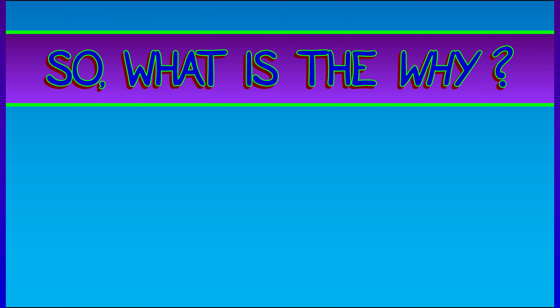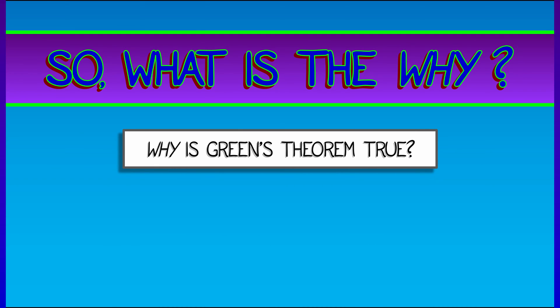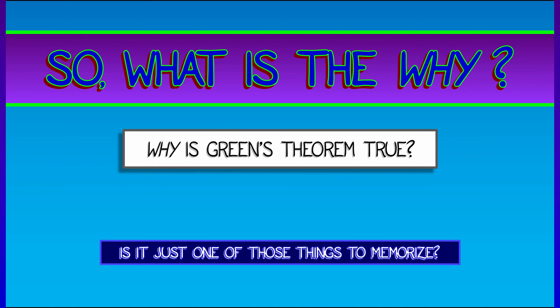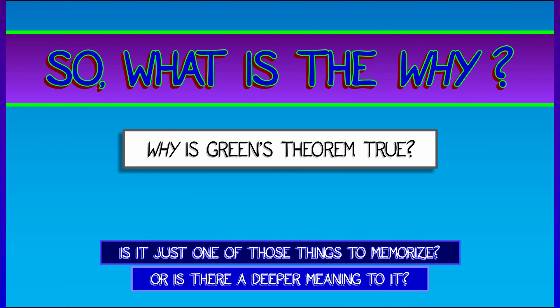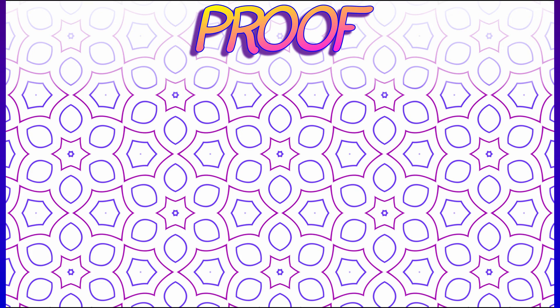All right, then. So we've seen what Green's theorem is. We've seen an example or two. But why is Green's theorem? Why is it true? Is it just one of those things that you got to memorize because it's on the exam? Or is there some deeper meaning to it? A meaning deep enough that it is worth digging into the idea of the proof. Well, what do you think? Yes, of course, it's really deep. It's really important. We're going to go over the proof, not a complete proof, but we're going to cover the core idea behind it.